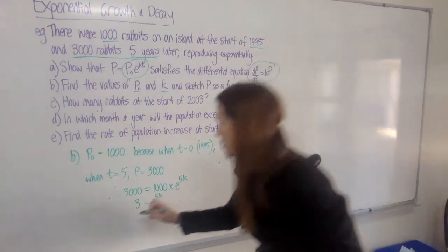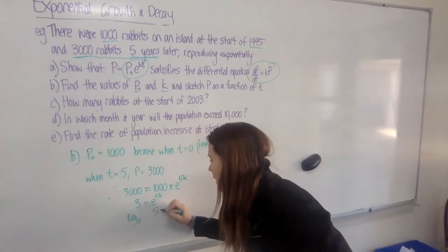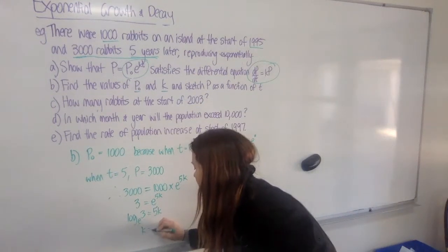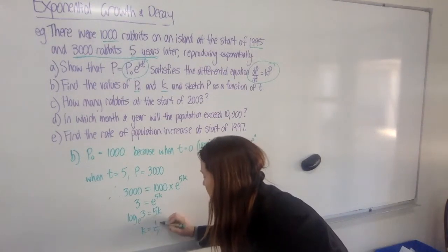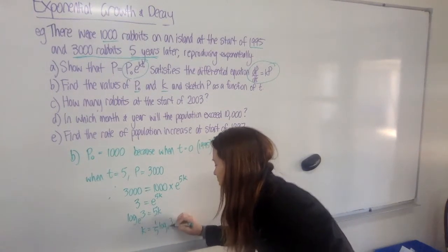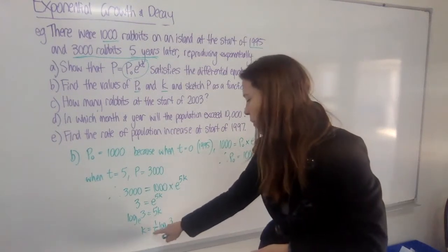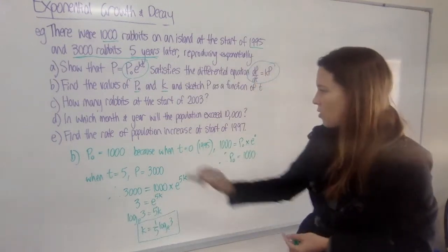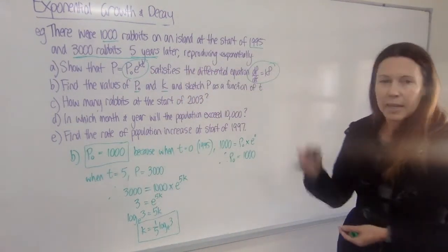Now I'll rewrite this as a log. So I've got e to the power of 5k is equal to 3. So then k itself, we need to just divide both sides by 5. So you can write it as one-fifth ln(3). Or you could write it as ln(3) over 5. You could even use the power law to bring this up. But I think that's nice and simple. So I've got both of my answers there. I'll put them in a box so it's nice and clear.